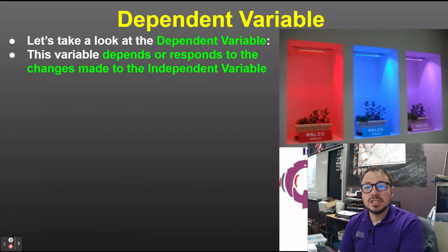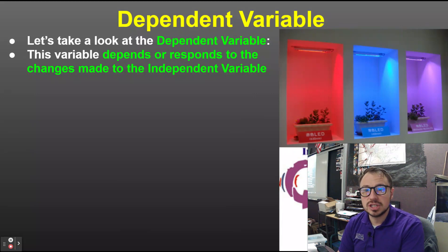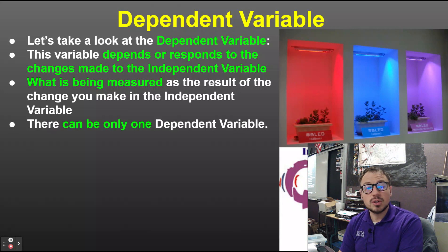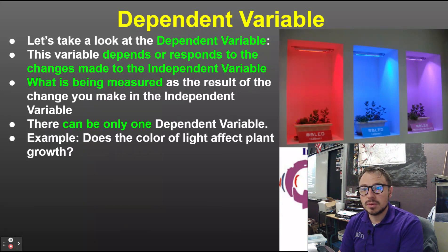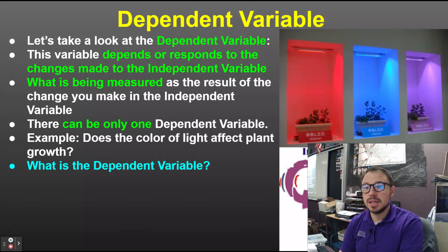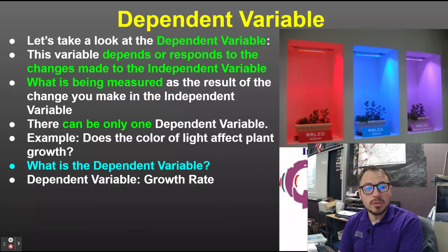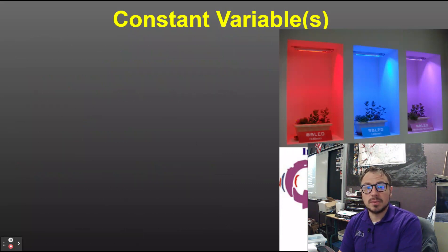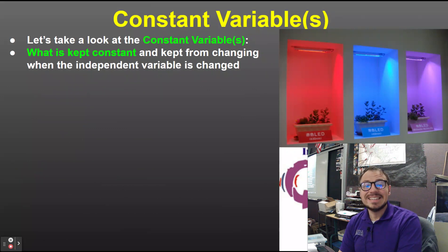The dependent variable is the variable that depends on or responds to the changes made in the independent variable. It is what is being measured as a result of the change you make in the independent variable, and there can only be one dependent variable. In the example 'Does the color of light affect plant growth?' the dependent variable is the growth rate — that's what we are measuring. We change the light color to see if it influences the plant growth rate.